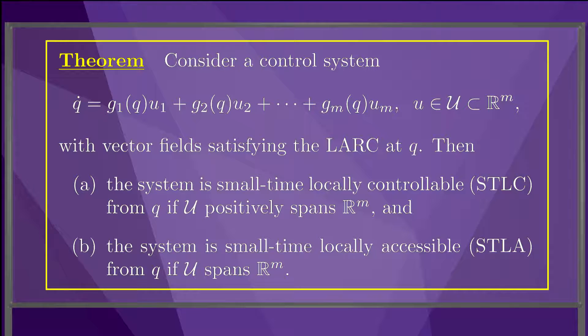Basically, a positively-spanning control set allows motion forward and backward along vector fields, while a spanning control set may only allow unidirectional motion along the vector fields.